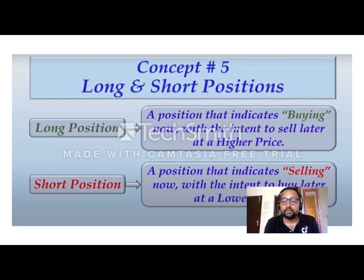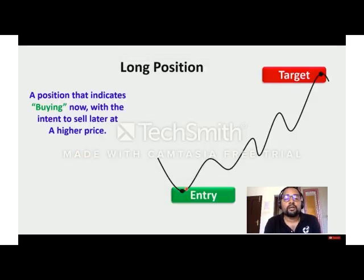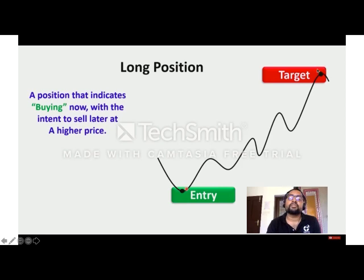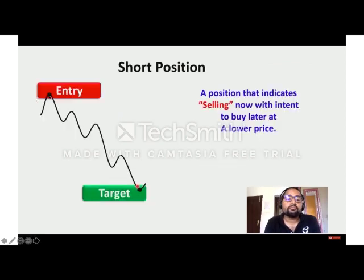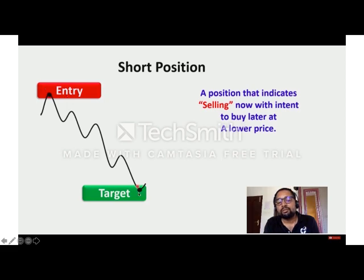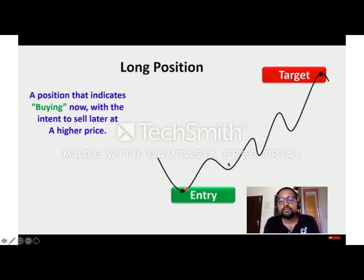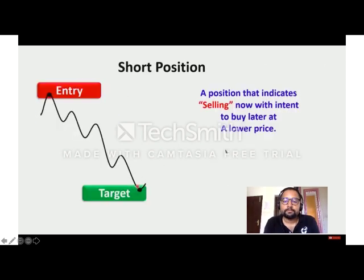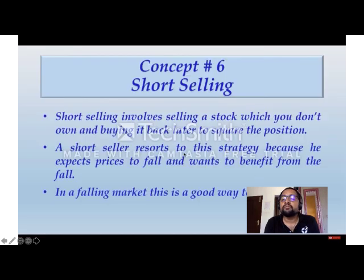In a long position, you enter at a lower price, the price moves up, and you sell at the target price for a profit. In a short position, you sell at a higher price point and then buy it back at a lower price for a profit. Short selling involves selling the stock which you don't own and buying it back later to close the position. A short seller uses this strategy because they expect prices to fall and want to benefit from that fall — in a falling market, this is a good way to make money.